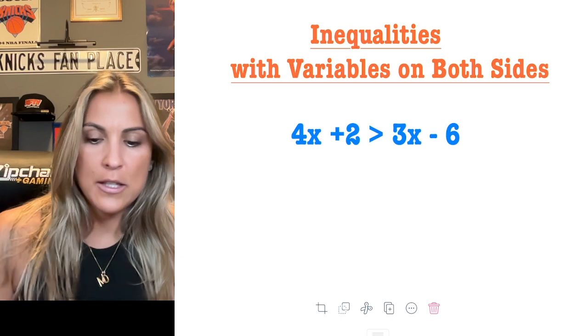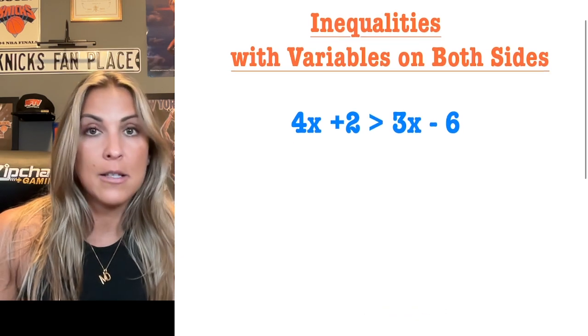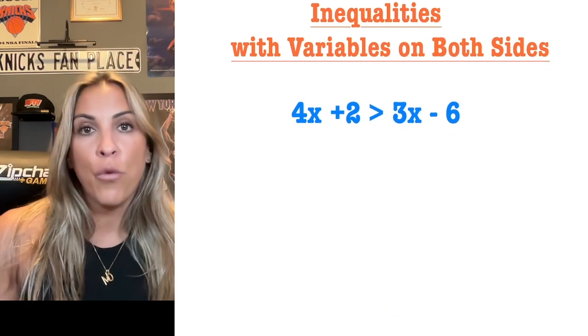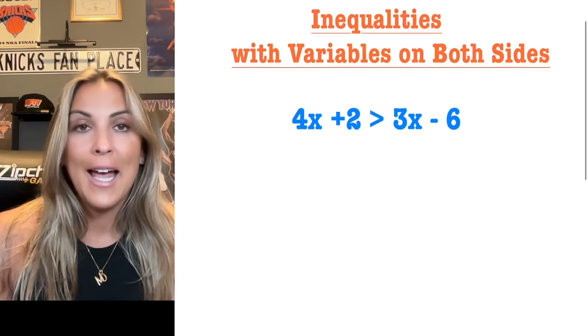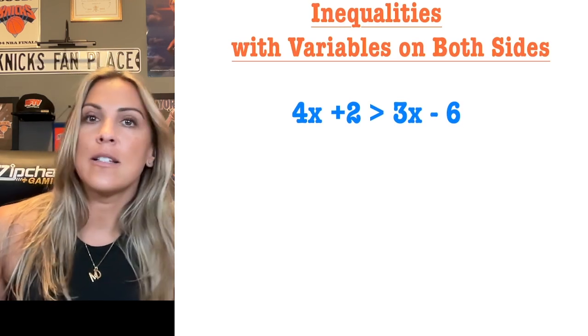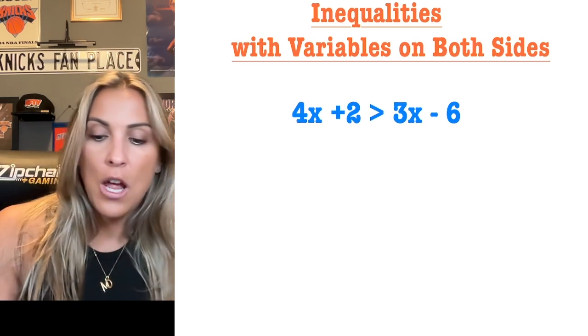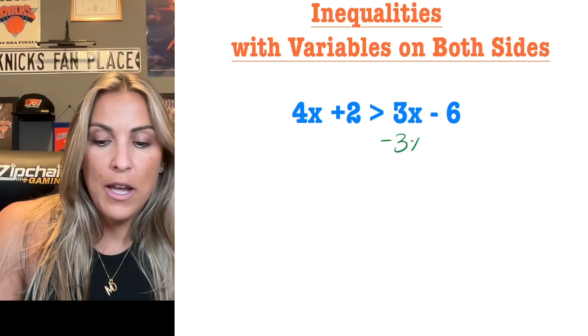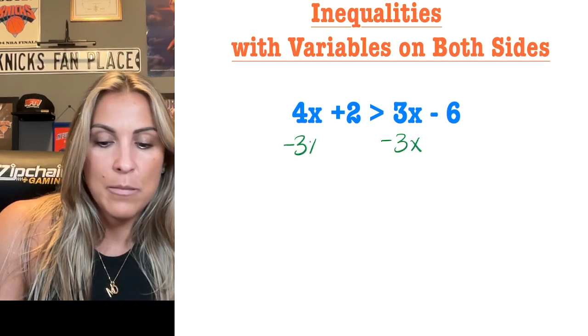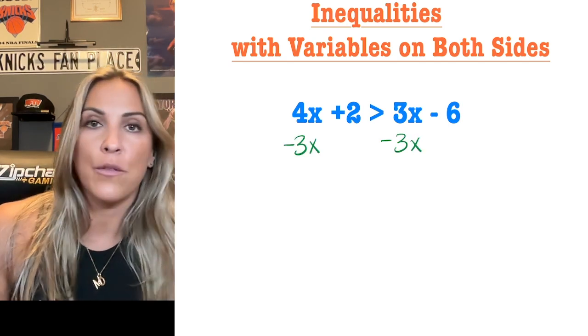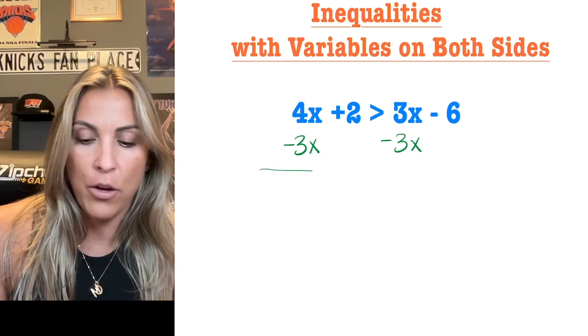So we have two options here. I can get rid of that 3x by subtracting it from both sides or I can get rid of that 4x by subtracting it from both sides. Either way is fine. I just like to try to avoid negatives when I can. So I'm going to subtract the 3x from both sides first because if I subtracted the 4x from the 3x that would result in a negative value.